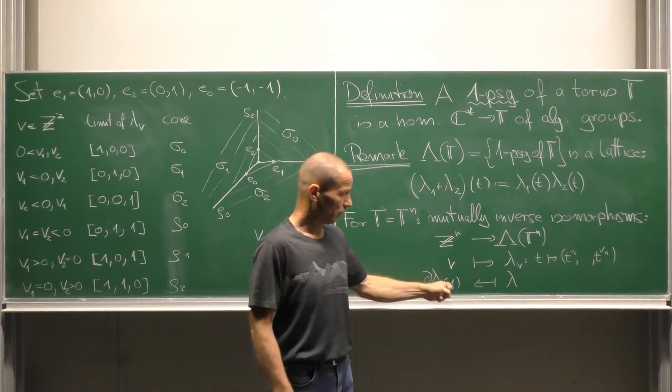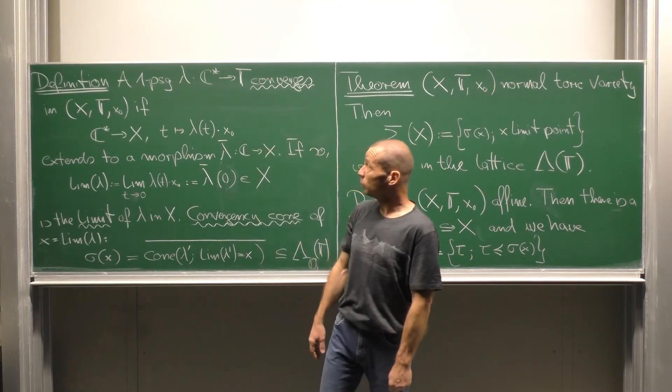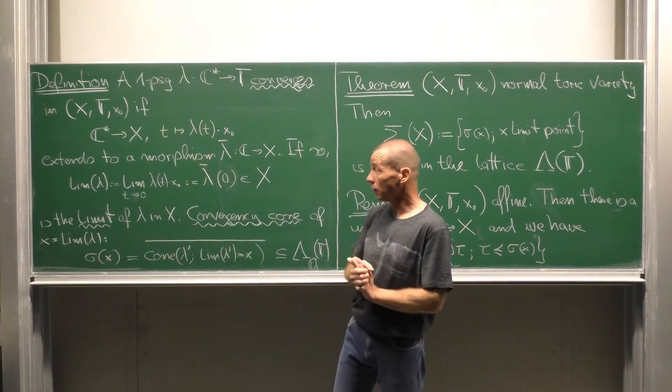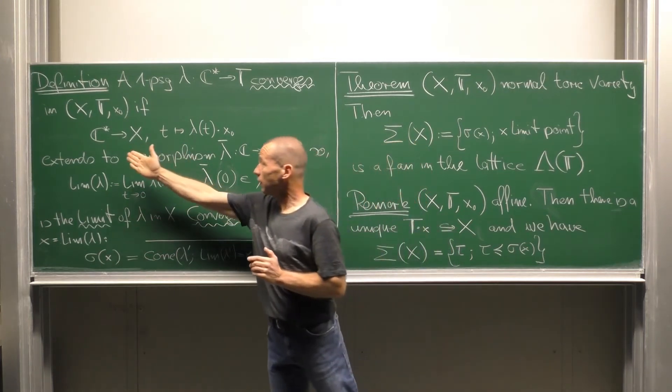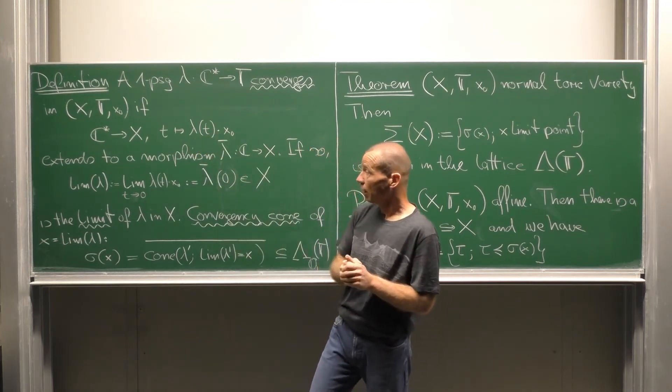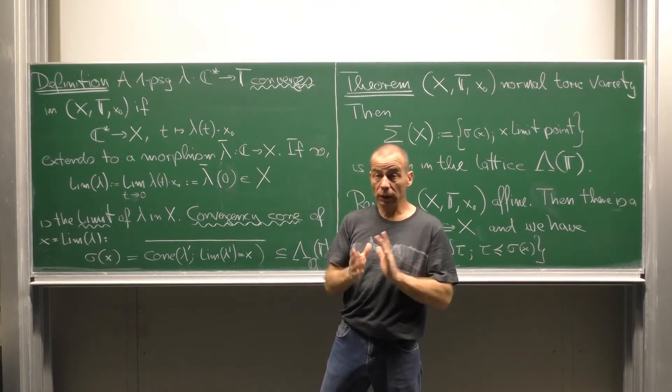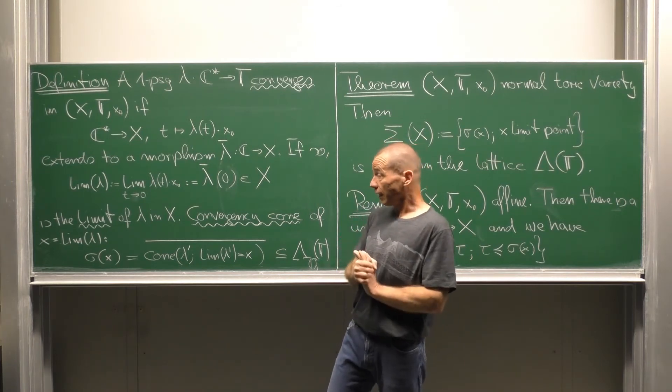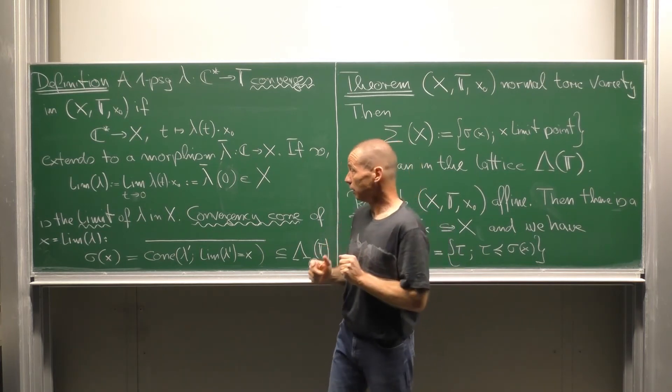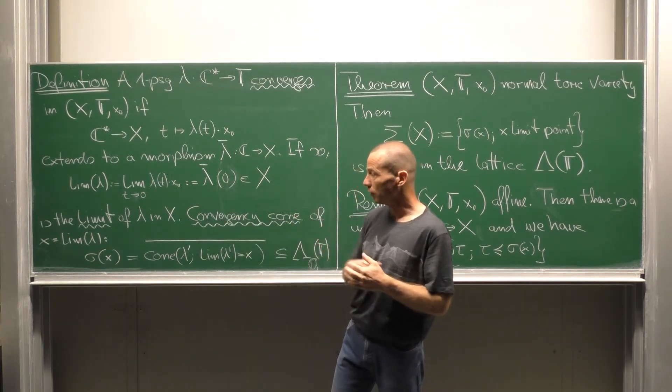We say that the one parameter subgroup lambda of a torus T converges in a toric variety Tx, Tx0, if the map from C star to x, defined by sending T to lambda of T applied to the base point x0, if this map extends to a morphism lambda bar from C to x. In this case the limit point of lambda in x is defined just to be the value of that extension in the point 0. So we obtain a point in x.